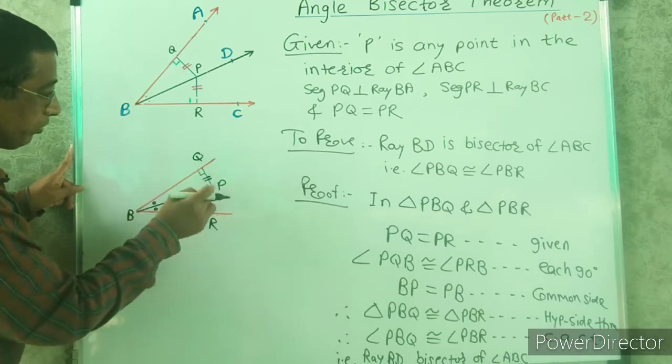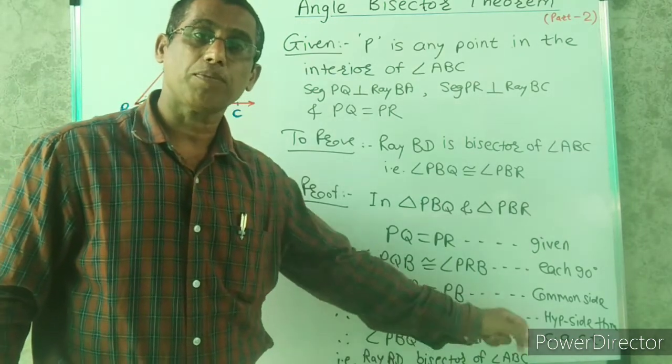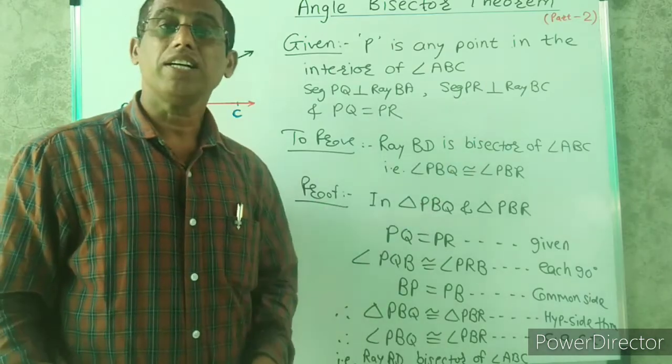Angle PBQ and angle PBR are congruent, means ray BD is the bisector of angle ABC. Hence the proof.